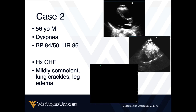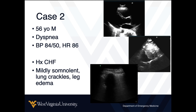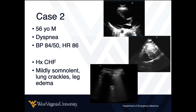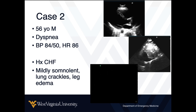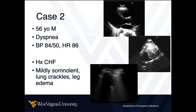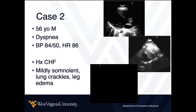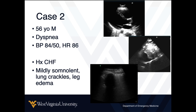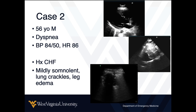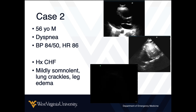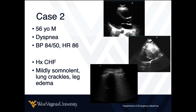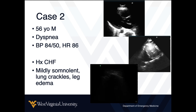Next case: a 56-year-old male who is short of breath with blood pressure 84 over 50 and heart rate 86, with a history of congestive heart failure. The patient is mildly somnolent, you hear crackles on lung exam, and the legs appear swollen. So short of breath, crackles, swollen legs — you may be thinking CHF, but will ultrasound help you differentiate this patient further?